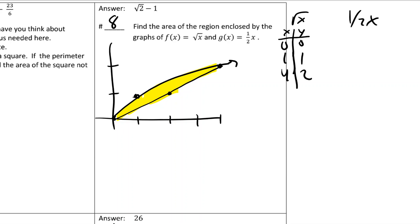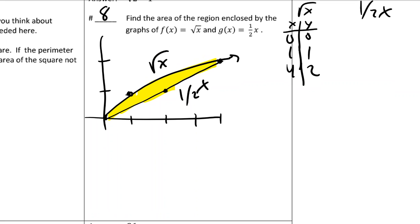On these questions it does help because you do have to know which one's on top and which one's on bottom. So it looks like the square root of X is on top. So if there's one that's always on top and one that's always on bottom, you should integrate top function minus bottom function.